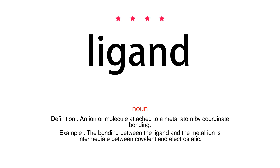Example: the bonding between the ligand and the metal ion is intermediate between covalent and electrostatic.